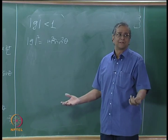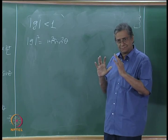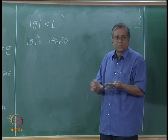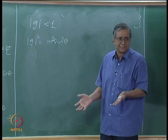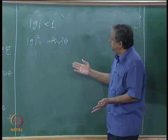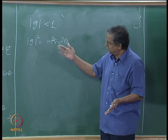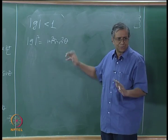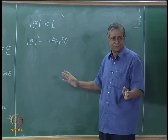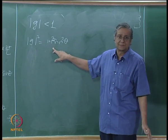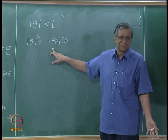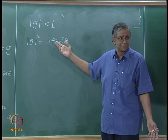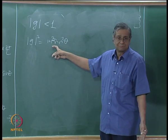Is this good news or bad news? We want |g| = 1 (or ≤ 1). But |g|² = 1 + σ²·sin²(θ). The only parameters we can choose are Δx and Δt, which determine σ. Since σ² is always positive, |g|² > 1 for any σ ≠ 0 and any θ ≠ 0. We are stuck — there is no value of σ for which this is ≤ 1.